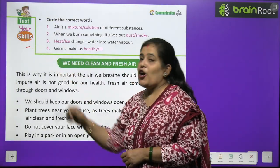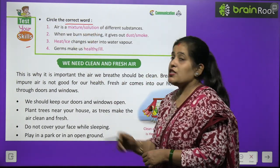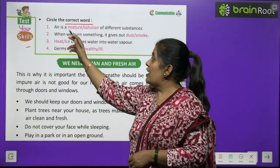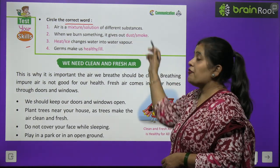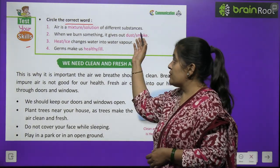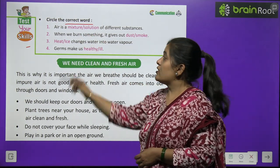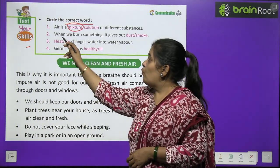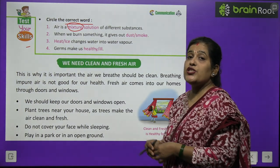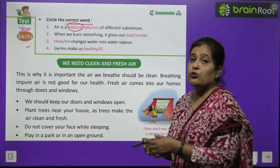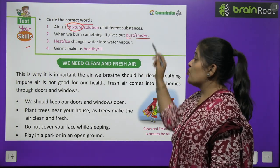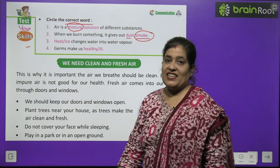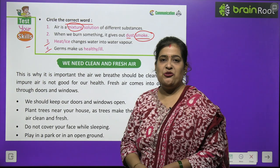Now time to test your skill. Circle the correct word. Air is a mixture (not solution) of different substances — so circle 'mixture'. When we burn something, it gives out smoke (not dust) — so circle 'smoke'. Number three and four you will do by yourself.